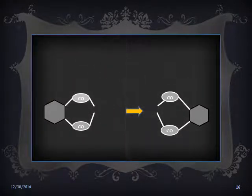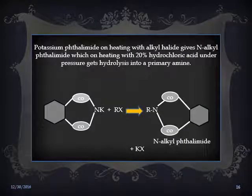This is the third reaction according to the list — the Gabriel Phthalimide reaction. Phthalimide is treated with caustic potassium (KOH) to get potassium phthalimide. Potassium phthalimide on heating with an alkyl halide gives an alkyl phthalimide, which on heating with 20% hydrochloric acid (HCl) under pressure gets hydrolyzed into a primary amine, along with potassium halide as a byproduct.